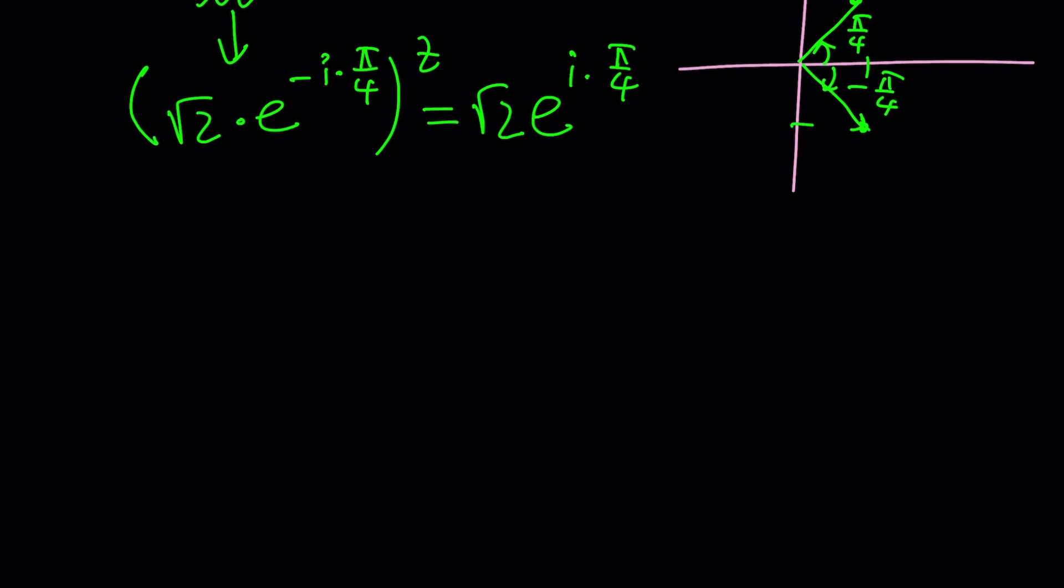You're going to be getting something like root 2 to the power z times e to the power negative i z pi over 4, and that's equal to root 2 times e to the power i pi over 4. So in this case, you basically want the following. You want root 2 to the power z to be root 2. So z should be 1, right?